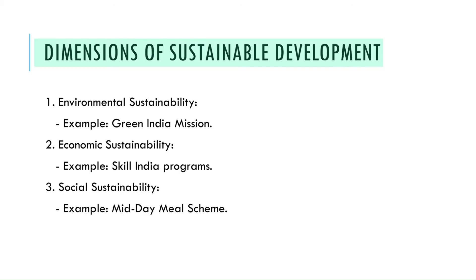Sustainable Development has three interconnected dimensions. The first is environmental sustainability, which focuses on preserving natural ecosystems while using resources responsibly — for example, India's Green India Mission promotes afforestation, and efforts like Namami Ganga aim to clean and rejuvenate the river Ganga. The second is economic sustainability: economic growth should benefit everyone, especially the less fortunate, ensuring no one is left behind. Programs like Skill India support small-scale industries, while renewable energy initiatives such as solar panel production contribute to long-term economic growth.